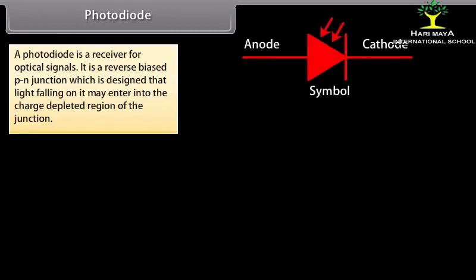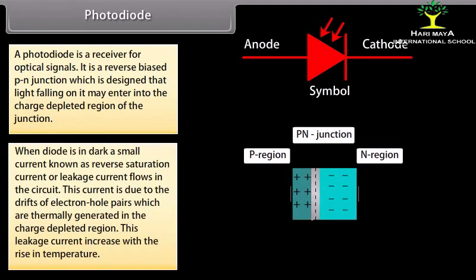Photodiode: A photodiode is a receiver for optical signals. It is a reverse biased P-N junction designed so that light falling on it may enter into the charge depleted region of the junction. When the diode is in the dark, a small current known as reverse saturation current or leakage current flows in the circuit.